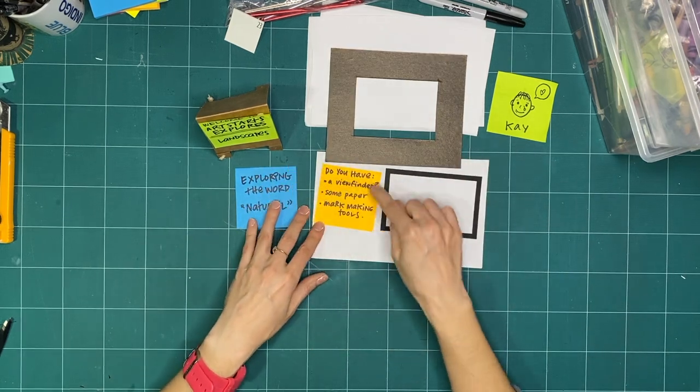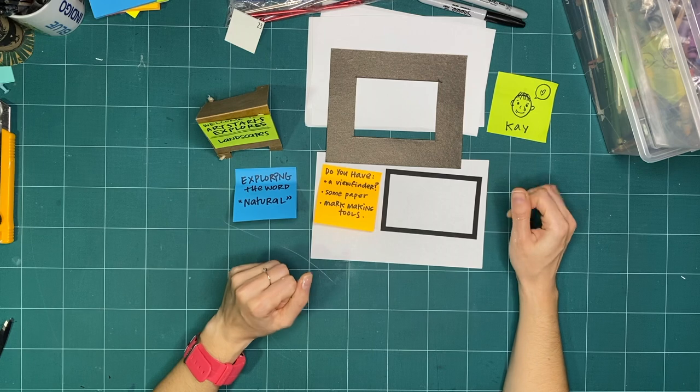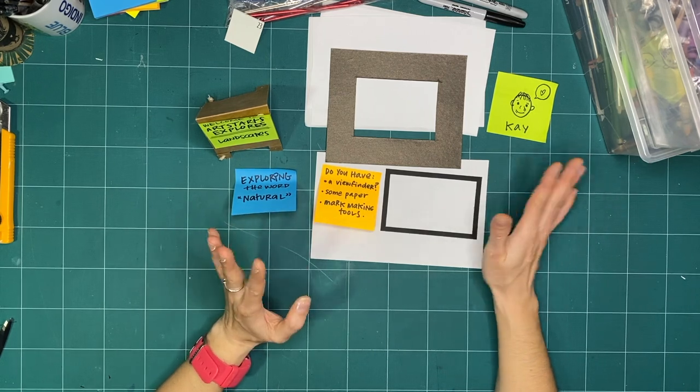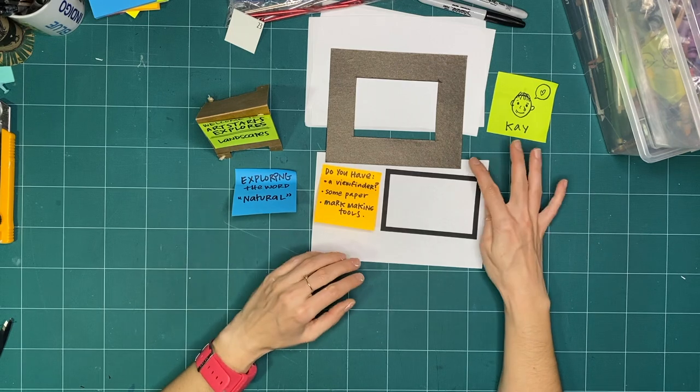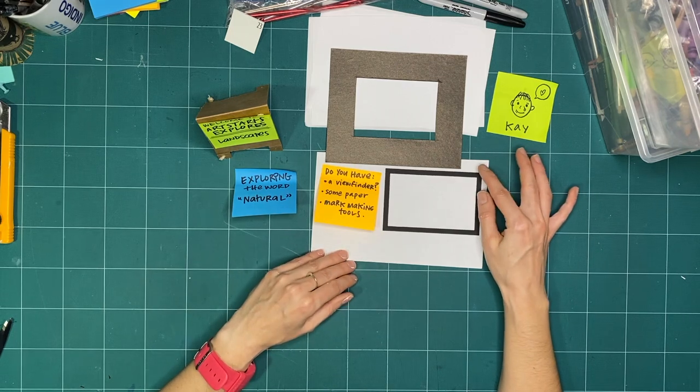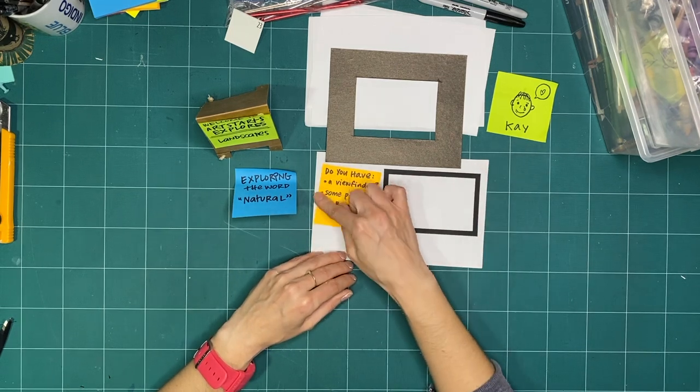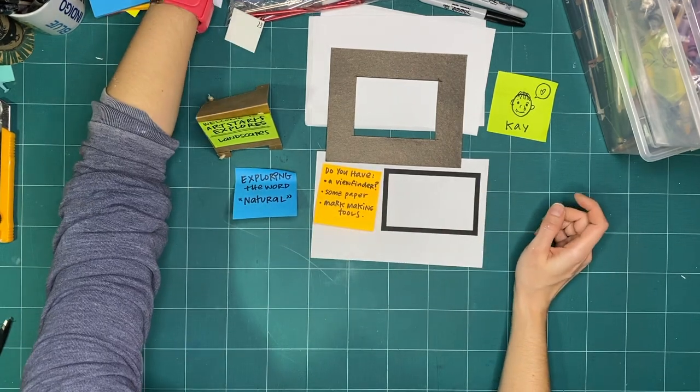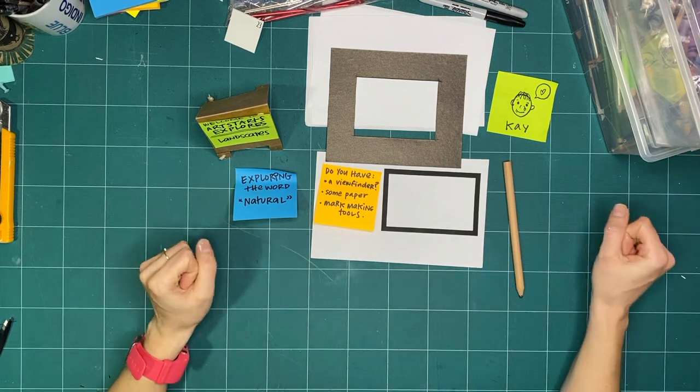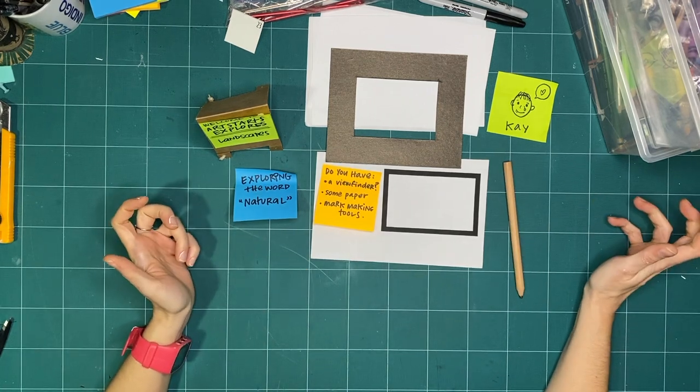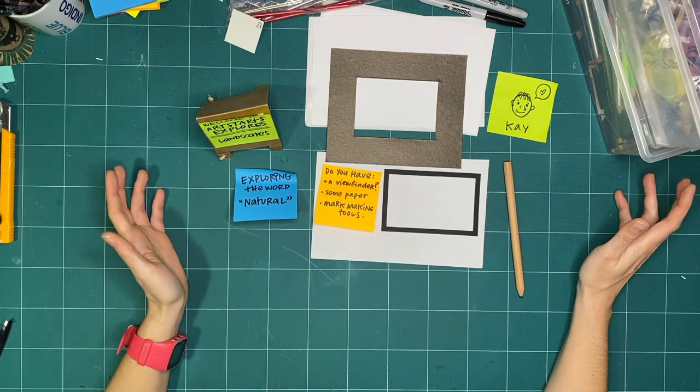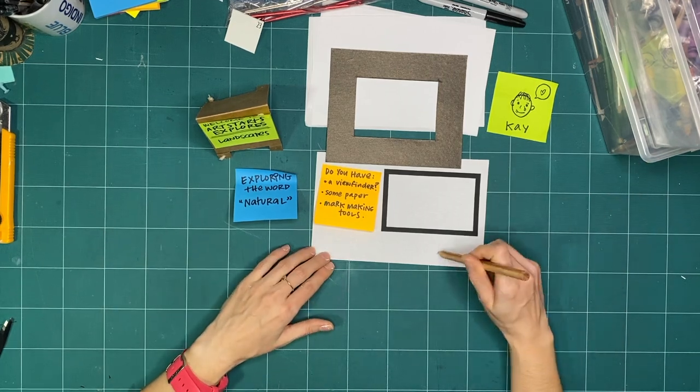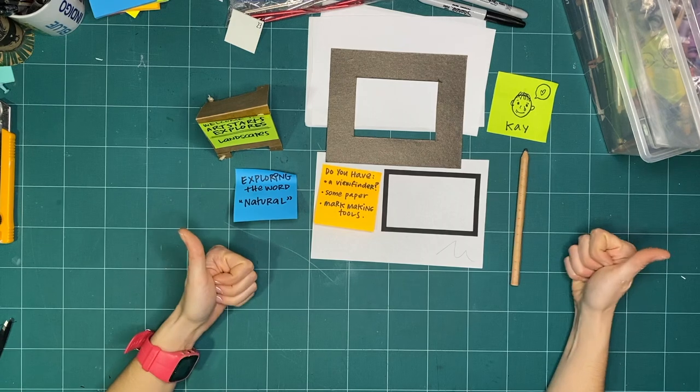Do you have some paper? Any kind of paper is great from the recycling bin, project that you've used before that's already got marks on it. That's just great. Nothing we're making is for keeps. We're just playing and trying things out. And then do you have any mark making tools? And a mark making tool is anything that makes a mark. That's a pencil, a pencil crayon, crayons, paint, lipstick, anything you have permission to use that can mark up a page is just great.